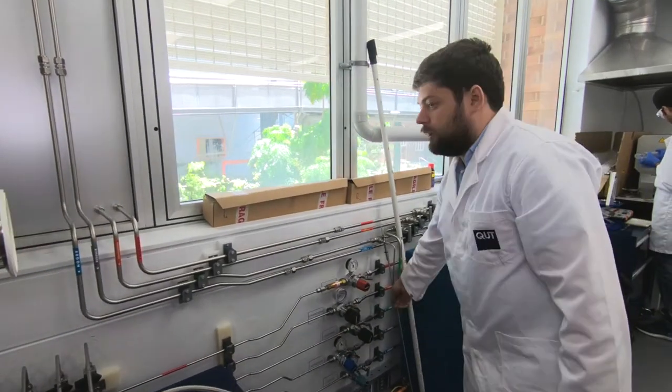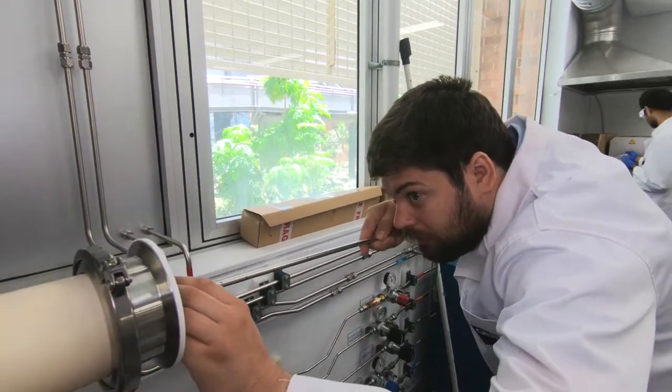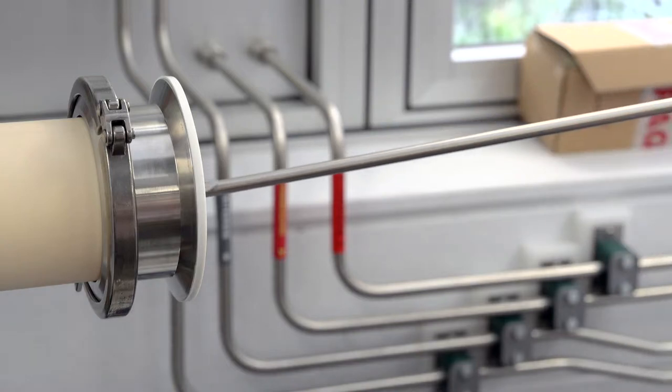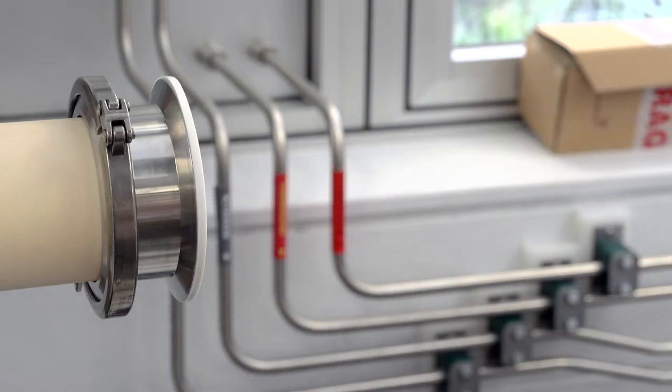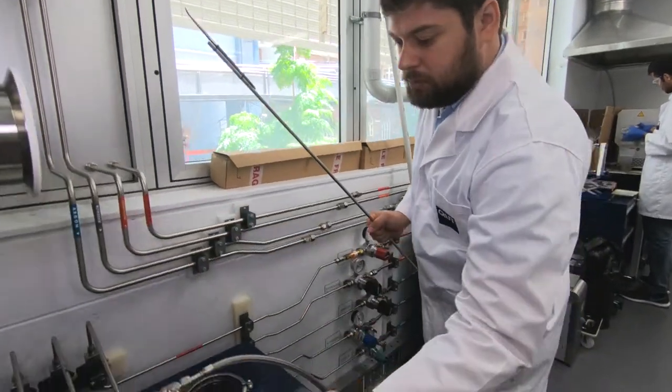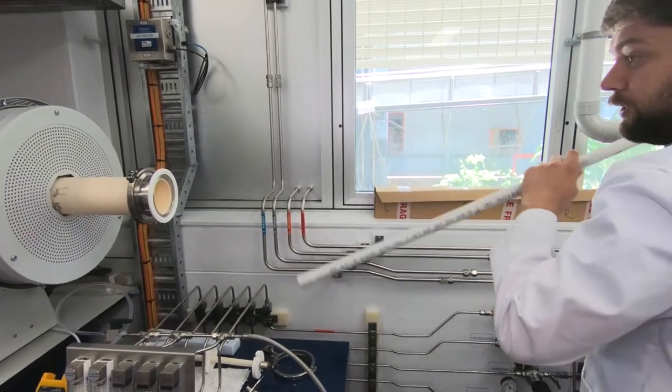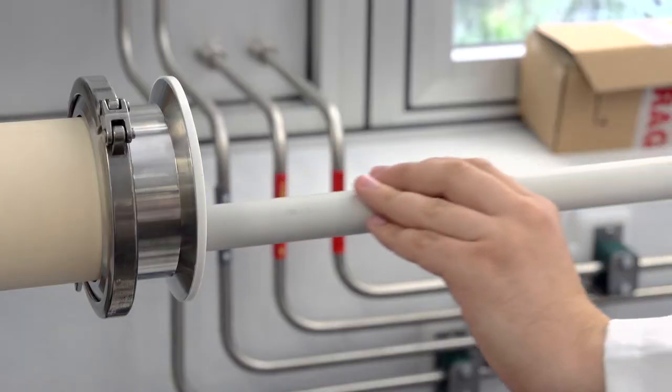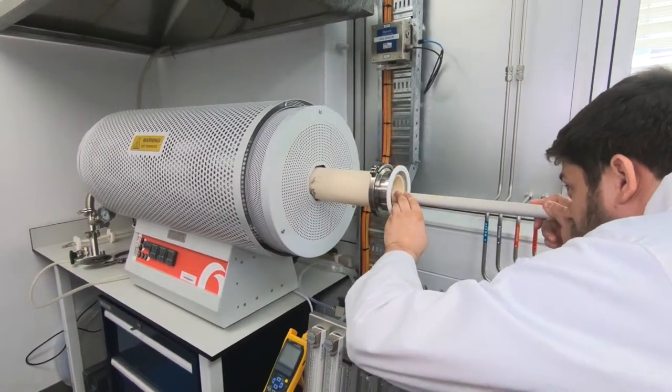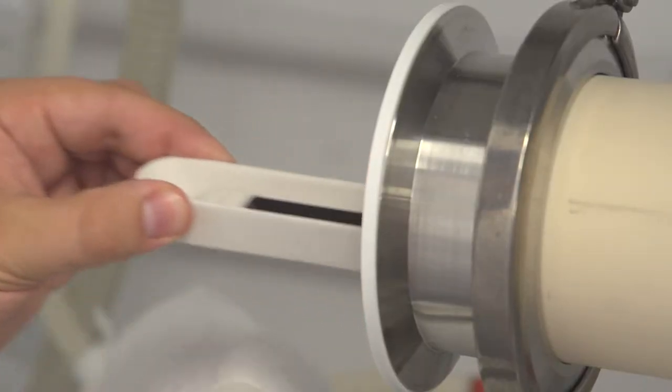Now we can take our samples from the furnace. We need to do it carefully because it's very easy to spill the powder. First bowl we just tilt like this, and second one we push through the furnace to the other side.